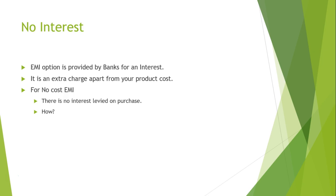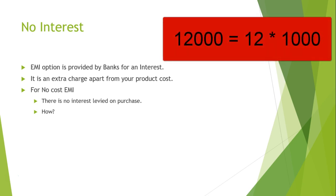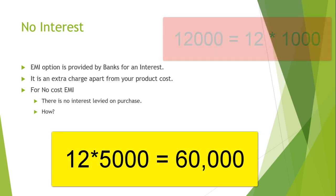EMI stands for Equated Monthly Installments, Easy Monthly Installments, or Equal Monthly Installments. For example, if you have purchased a 12,000 rupee item and you pay in a span of 12 months, then you can pay 1,000 per month instead of all 12,000 in one single month. This is a very good option for people who do not have large liquid cash in hand.